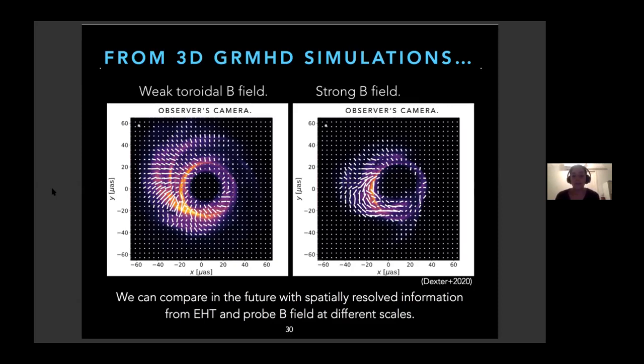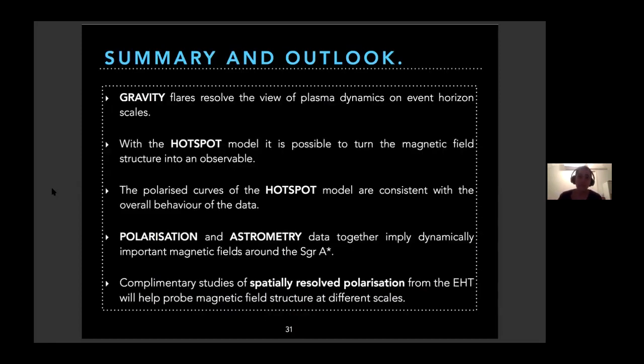With this, I'd like to leave you with my summary and the outlook. GRAVITY flares have resolved the plasma dynamics at event horizon scales. With the hotspot model, it's possible to turn this magnetic field into an observable. The hotspot model is consistent with the overall behavior of the data. Both polarization and astrometry imply that we have dynamically important magnetic fields around Sagittarius A star. And complementary studies with the EHT will be very important. That's all. Thanks.